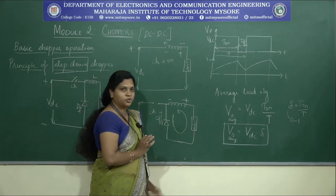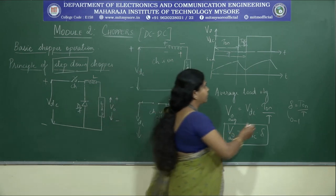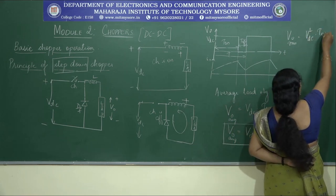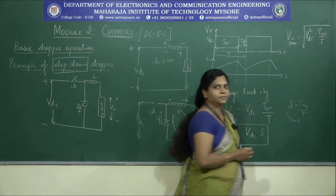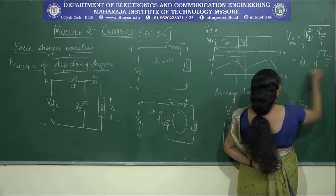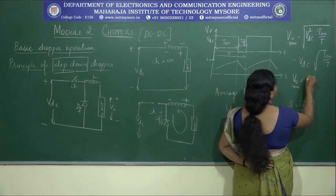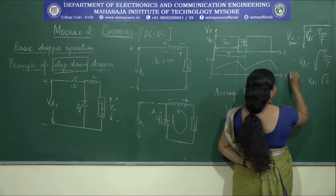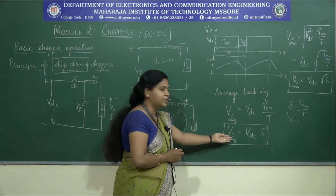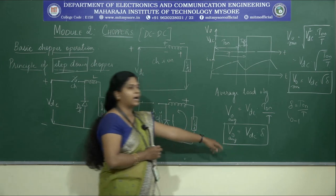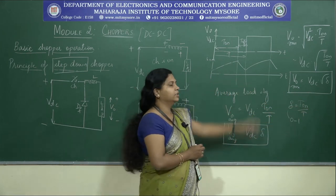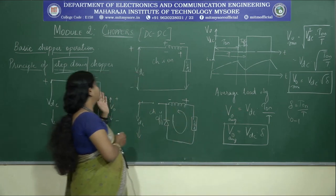Similarly, V_0(avg) has been found. If you want to find V_0(RMS): V_0(RMS) = √(VDC² × T_on/T) = VDC × √δ. The average current is VDC/R × δ, and the RMS value of current is VDC/R × √δ. This concludes the study of the step down chopper.